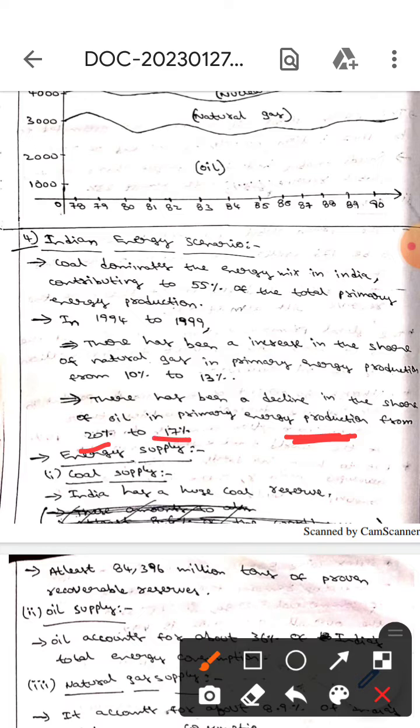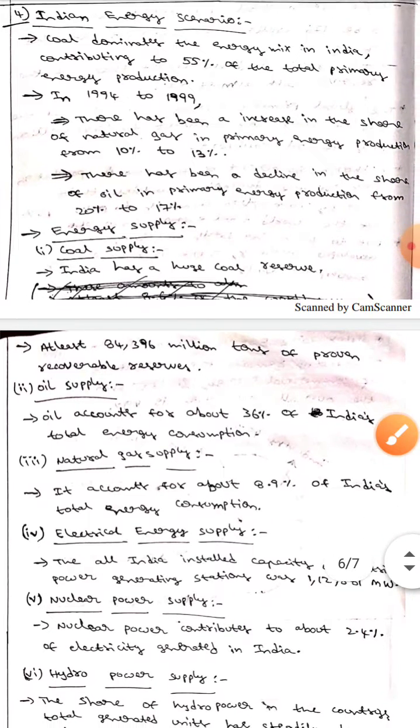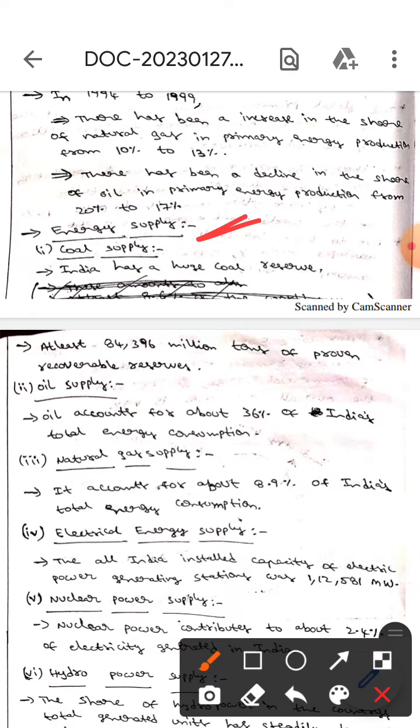Let's talk about energy supply. The first one is coal supply. India has a huge coal reserve, almost 84,396 million tons of proven recoverable reserves.